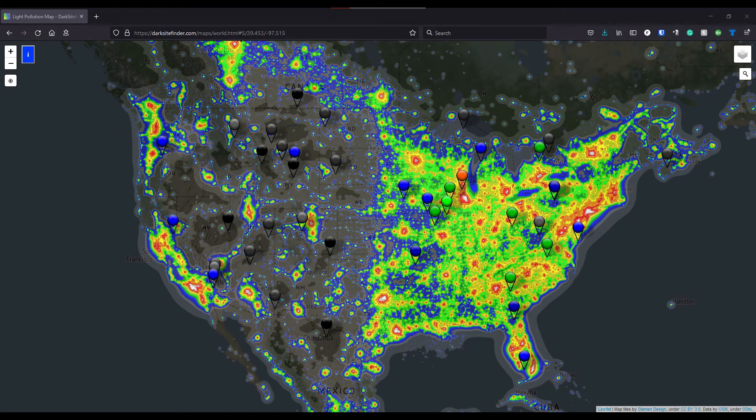I also recommend a star app. I use StarWalk2. You can hold it up to the sky and see live where the constellations are. It's very helpful and I use it all the time. There's a few different apps, so find one that works for you and as always keep on learning and remember to smile.